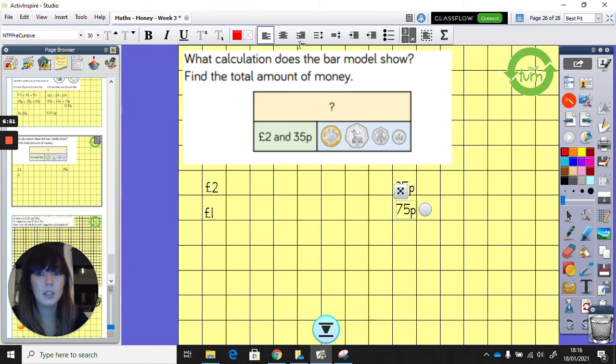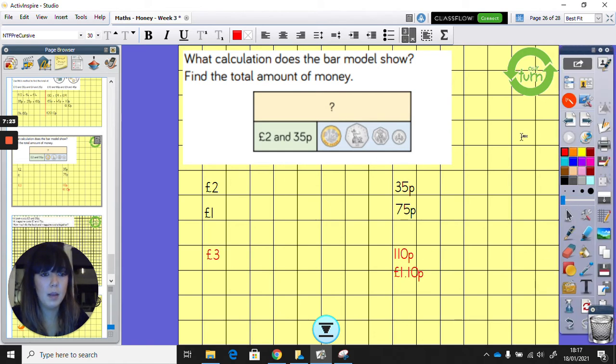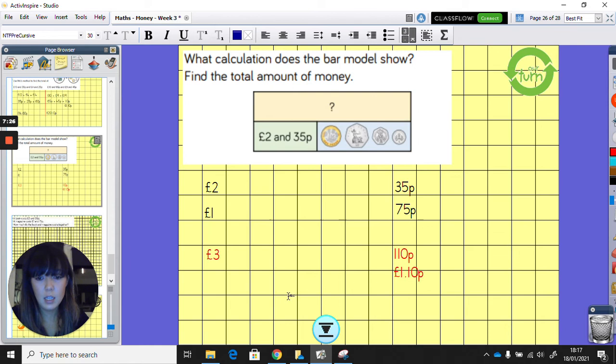£2, add £1, is £3. Now, we need to do 35p add 75p. So I know that 30 add 70 is 100. So we've got 100p, and I know 5 add 5 equals 10. So the answer is going to be 110p. Now, our work is not done, because we've still got to convert our 110p into our pounds. 110p is going to be £1.10p. So then we'd add our £3 and our £1.10p. And if we add those together, we get £4 and 10p. And that's our answer, and that's going to go at the top.